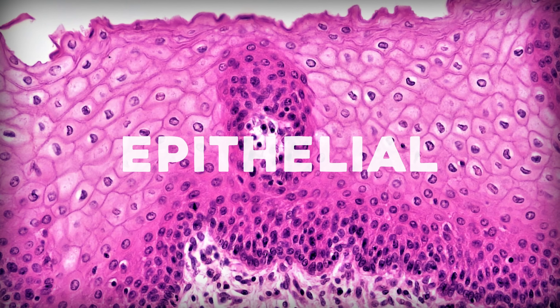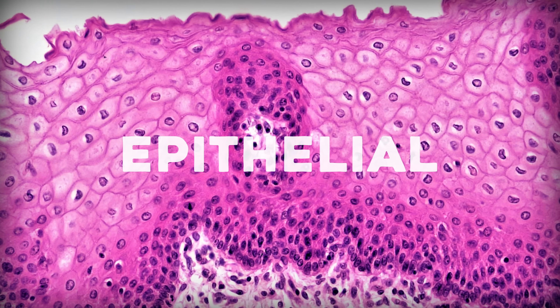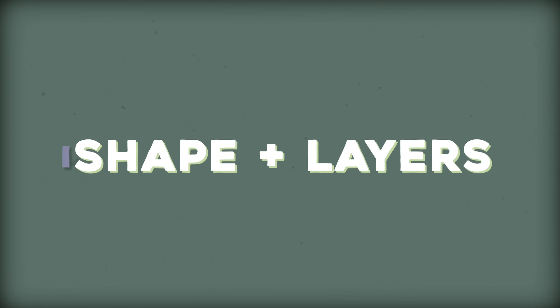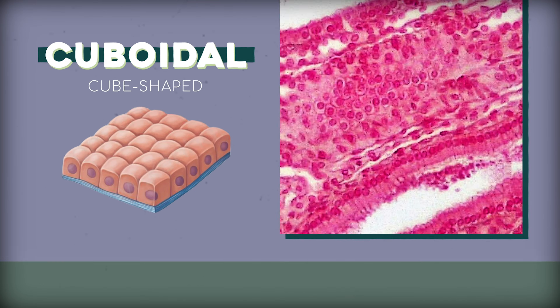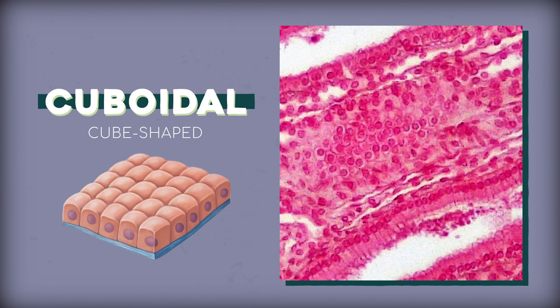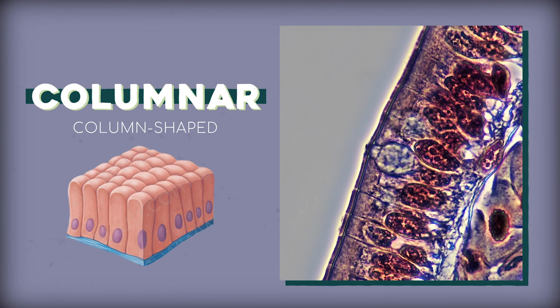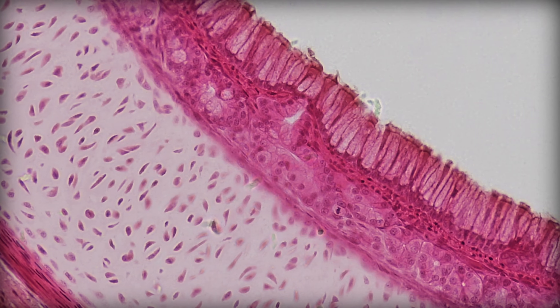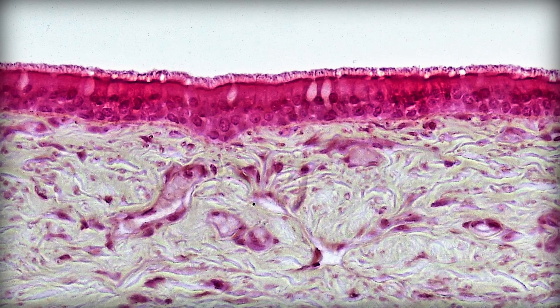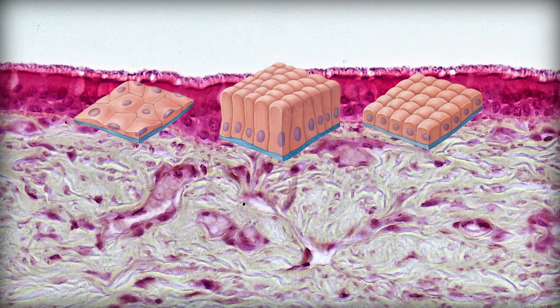Next up is epithelial tissue, a tissue type that makes up most of our skin and the borders between different organs. Now there are a lot of different types of epithelial tissue that might seem overwhelming, but there are two things you need to pay attention to: the shape of the cells, and how many layers you see. Shapes first. Epithelial cells can be cuboidal — cube shaped with a round little nucleus — squamous — a flat squashed cell with a flat looking nucleus — or columnar, or column shaped. They won't always be super clean cut shapes, but for the most part they'll be one of these three shapes.